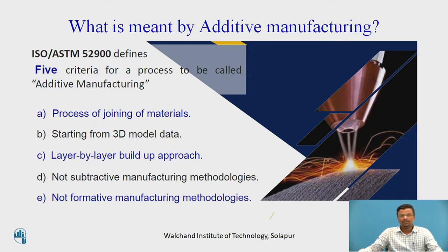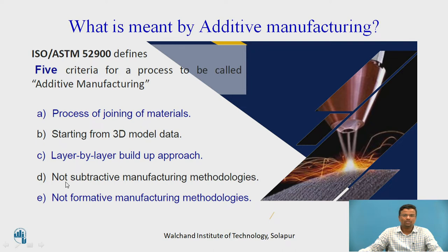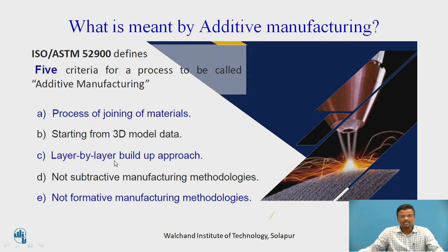There is one approach in additive manufacturing called the layer-by-layer approach. Whenever a product or component is developed, it is developed layer by layer. In additive manufacturing, the name itself implies there will be addition of material — there will not be any material removal process. This is not a subtractive manufacturing process, nor is it formative manufacturing like forging, soldering, or different types of molding processes.